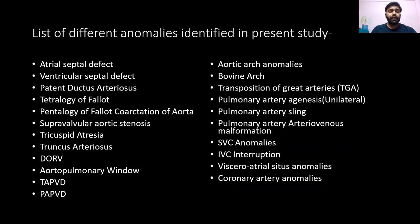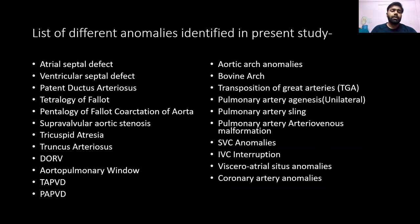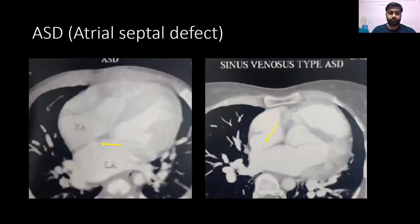A list of different anomalies were identified, ranging from atrial septal defects, ventricular septal defects, and patent ductus arteriosus, to rare anomalies like double outlet right ventricle (DORV), coronary artery sinus defects, and situs anomalies.